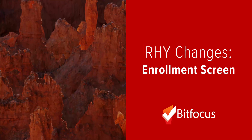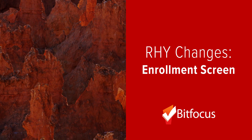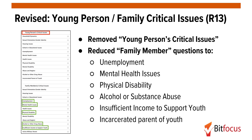Next, we'll review changes to the standard enrollment screen for RHY-funded projects. Young Persons Critical Issues and Family Critical Issues have essentially been combined to form one list, Family Critical Issues, and the response options have been reduced to include unemployment, mental health issues, physical disability, alcohol or substance abuse, insufficient income to support youth, and incarcerated parent of youth.